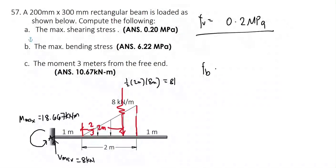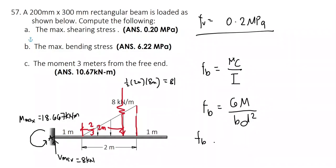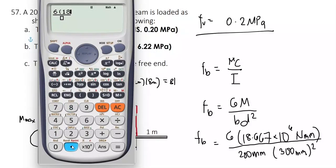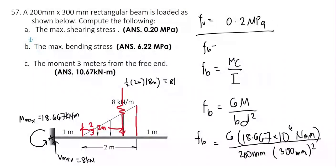To solve for the maximum bending stress, that is equal to Mc/I. But since this is a rectangular section, we can use the derived formula for maximum bending stress: σ = 6M divided by (b × h²). So the maximum bending stress equals 6 times 18.667 kN·m, converted to N·mm by multiplying by 10⁶, divided by 200 mm times (300 mm)². This gives a maximum bending stress equal to 6.22 MPa.